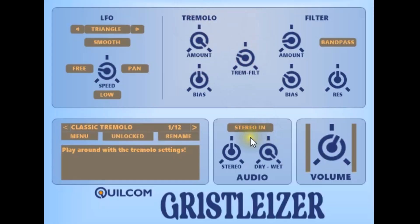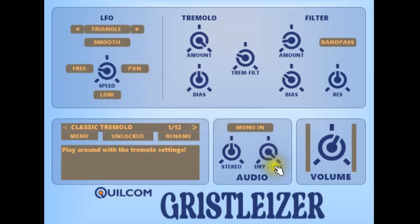Unlike the original, the processing internally is fully stereo, but you can mix the two inputs together — sum them to form a mono input. You can set the stereo width of the effect, which is really only valid when you have pan set, and you can mix the dry and wet signal together, which was also not available on the original.